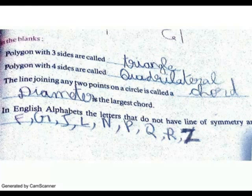Diameter is the largest chord. In the English alphabet, the letters that don't have a line of symmetry are F, G, J, L, N, P, Q, R, S.